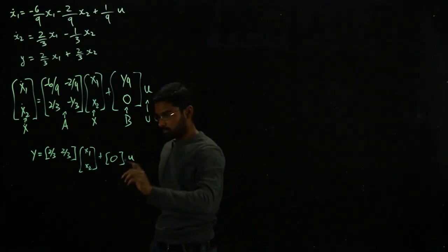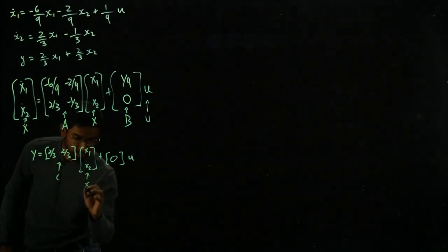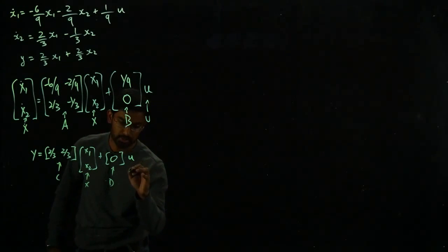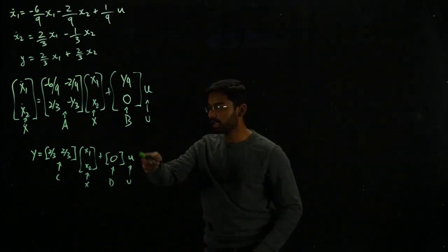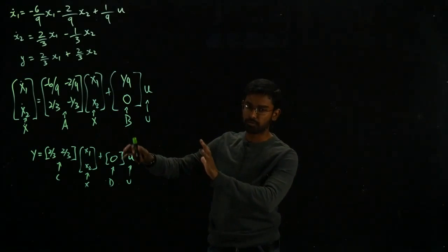This is the C matrix, this is the x state vector, D matrix and then the input u. This is y obviously. These two together is called the state space equation or the state space representation of any given system.